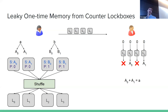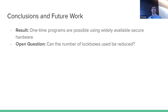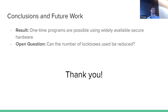In summary, we show you can build one-time programs from widely available hardware. An open question is reducing the number of lockboxes. We achieved a constant number per input bit, but our constants are not great — for a 256-bit input, around 10,000 lockboxes are required. Since a lockbox costs roughly one dollar, $10,000 per one-time program is financially infeasible. It would be very interesting to reduce this count.